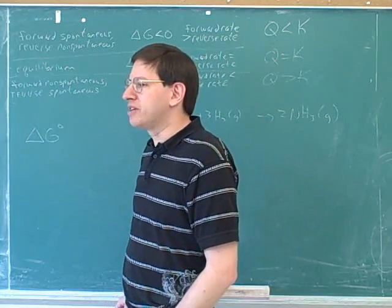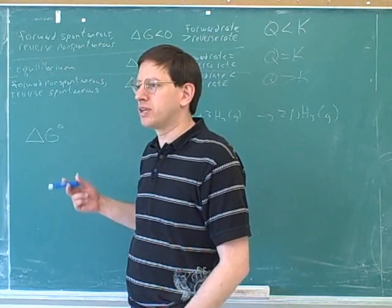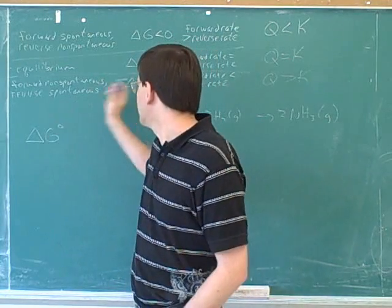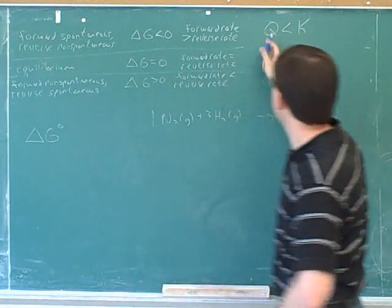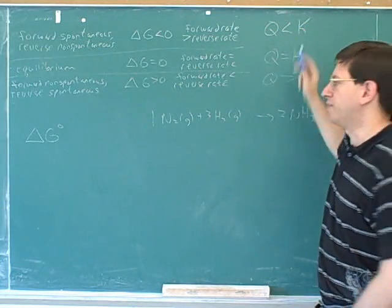So it's not based on what the actual delta G is right now. It's kind of like the difference between Q and K. It's a little bit similar to the difference between delta G and delta G circle. Q is based on the actual conditions right now. K is based on what the conditions will be at equilibrium.